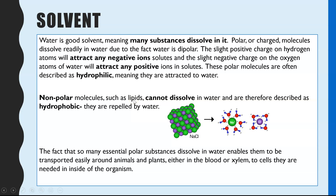What provides this solvent property goes back to the dipolar nature of water. The slight positive charge on hydrogen attracts any negative ions in a compound — as seen with sodium chloride, where chloride is negative and attracts the hydrogen part of water. The slight negative charge on oxygen attracts positive ions, so oxygen attracts sodium ions. These two types of attraction split the compound apart — that is what we mean by dissolving.